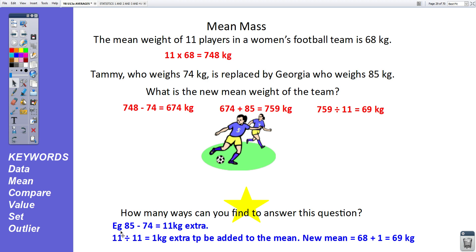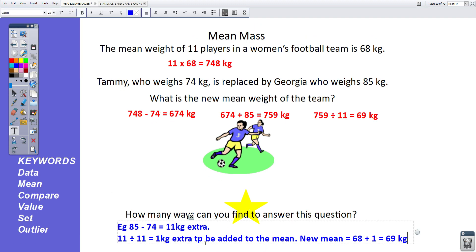A different way to approach it would be to work out that since Tammy is leaving, she weighs 74, we're taking away 74. Since Georgia is joining, she weighs 85. 85 take away 74 means there is 11 kilograms extra joining the team. If we work out the mean of that 11 kilograms split between 11 people, 11 divided by 11 is one kilogram. And that one kilogram extra has got to be added to the mean. So the new mean is 68, which was the old mean, add one, which is 69 kilograms. That's slightly more advanced mathematical thinking. There's nothing wrong with doing it the simple way, but this is a little bit more advanced mathematical thinking.